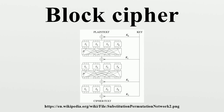Iterated Block Ciphers. Most block cipher algorithms are classified as iterated block ciphers, which means that they transform fixed-size blocks of plaintext into identical-size blocks of ciphertext via the repeated application of an invertible transformation known as the round function, with each iteration referred to as a round. Usually, the round function R takes different round keys as a second input, which are derived from the original key. Frequently, key whitening is used in addition to this.